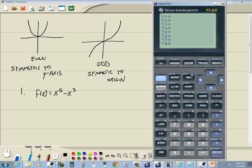My flashing cursor is on Y1 now, so I'll put x to the fifth. So I'll do x to the carat 5 minus x to the carat 3, and now let's press graph.